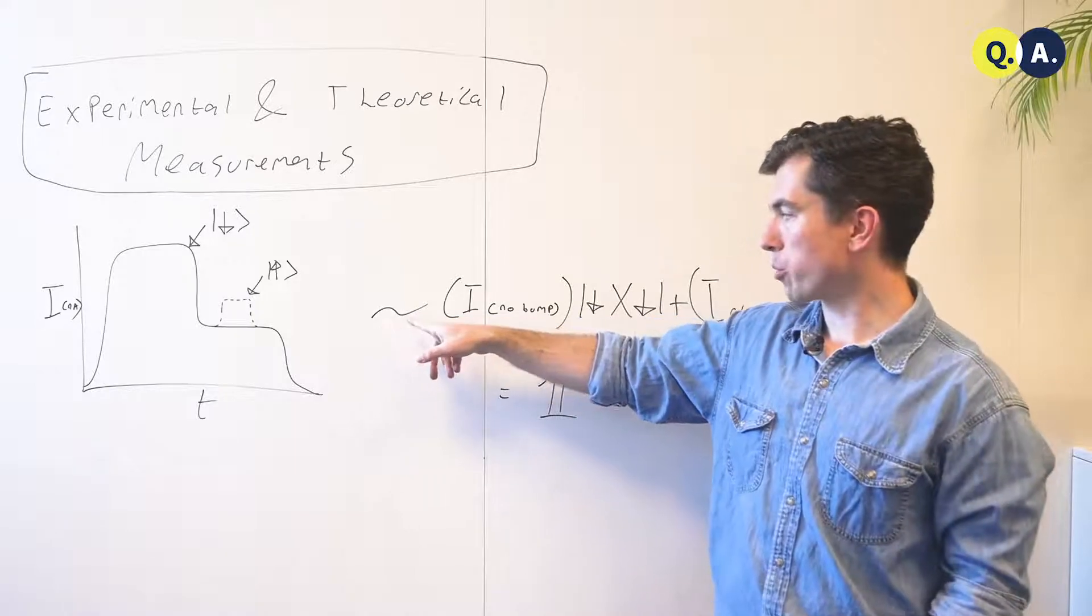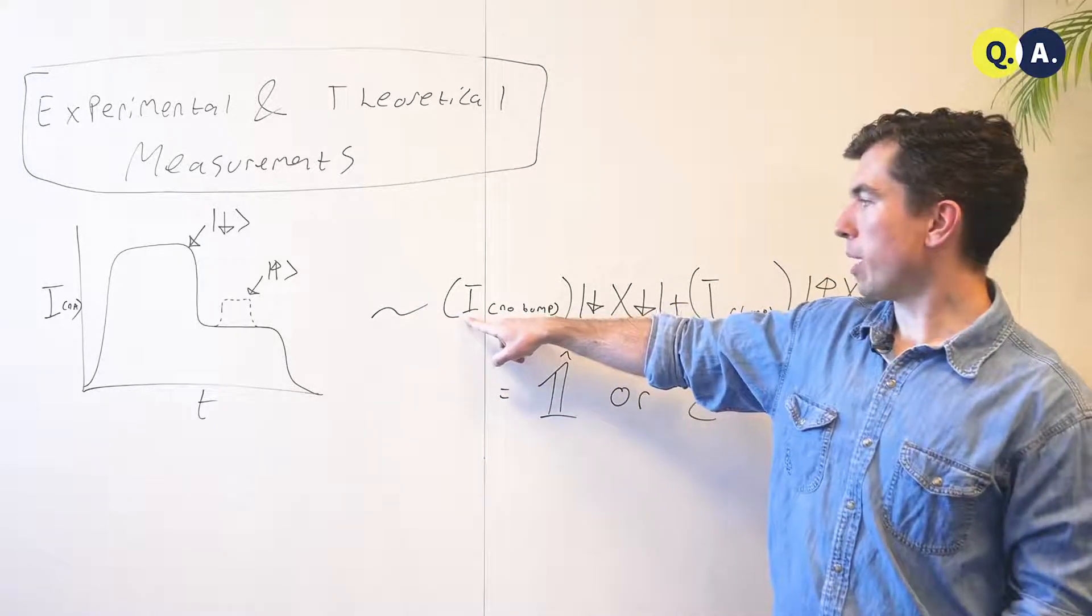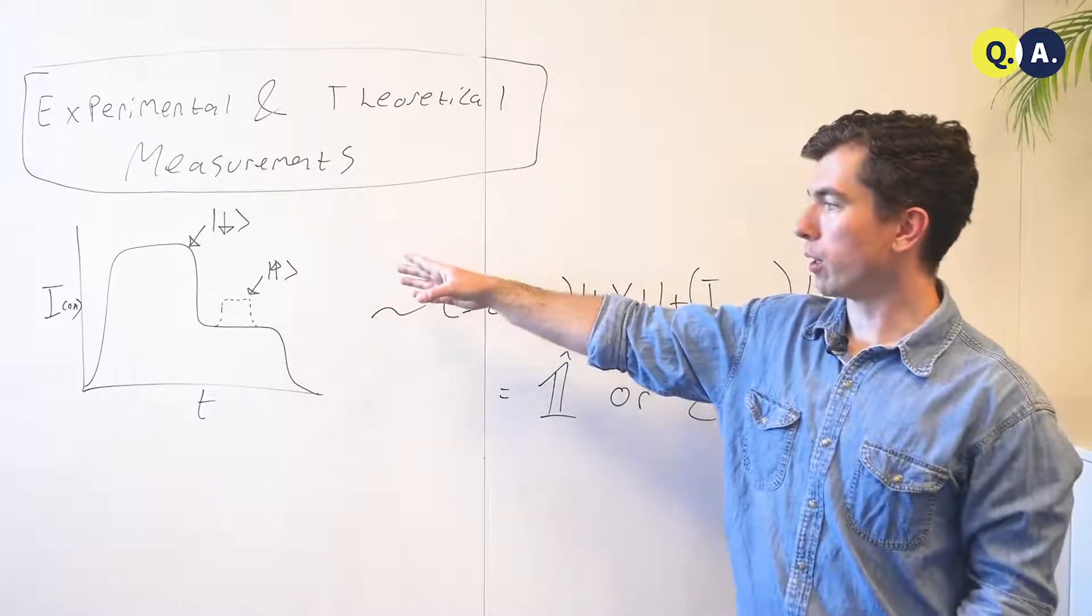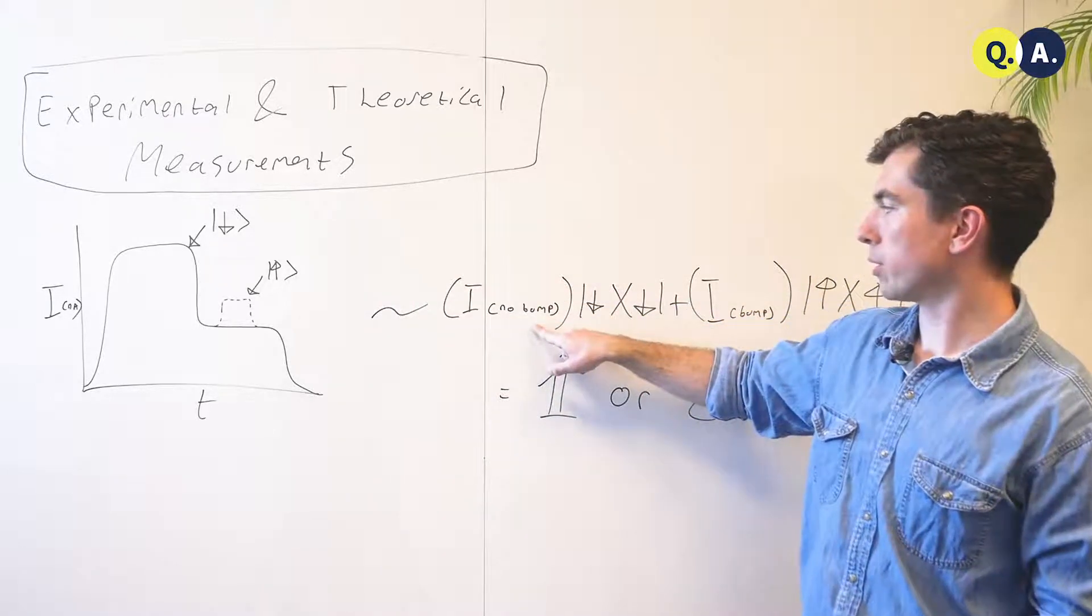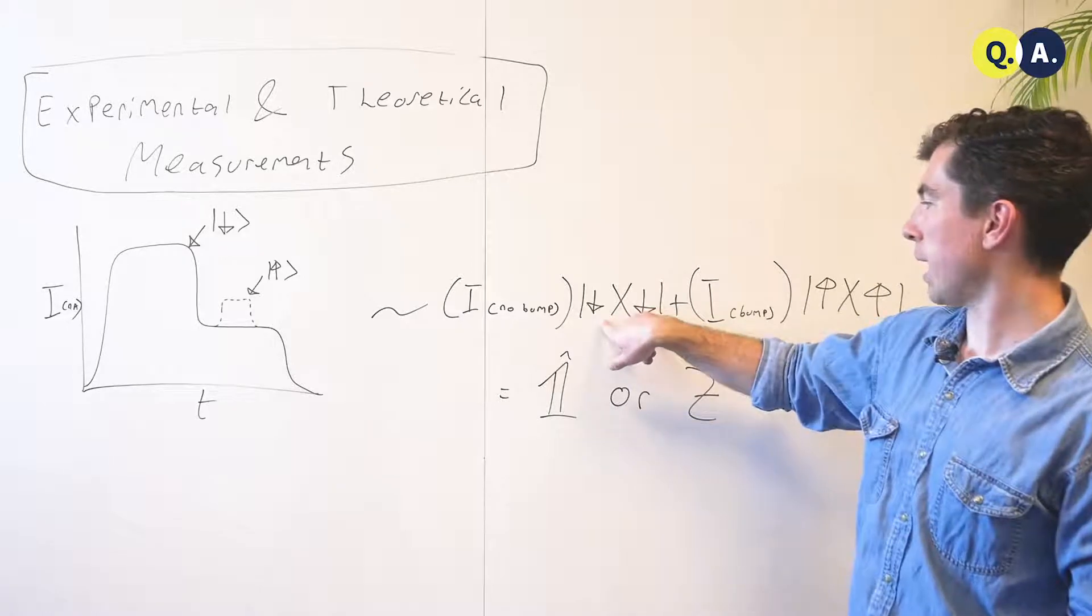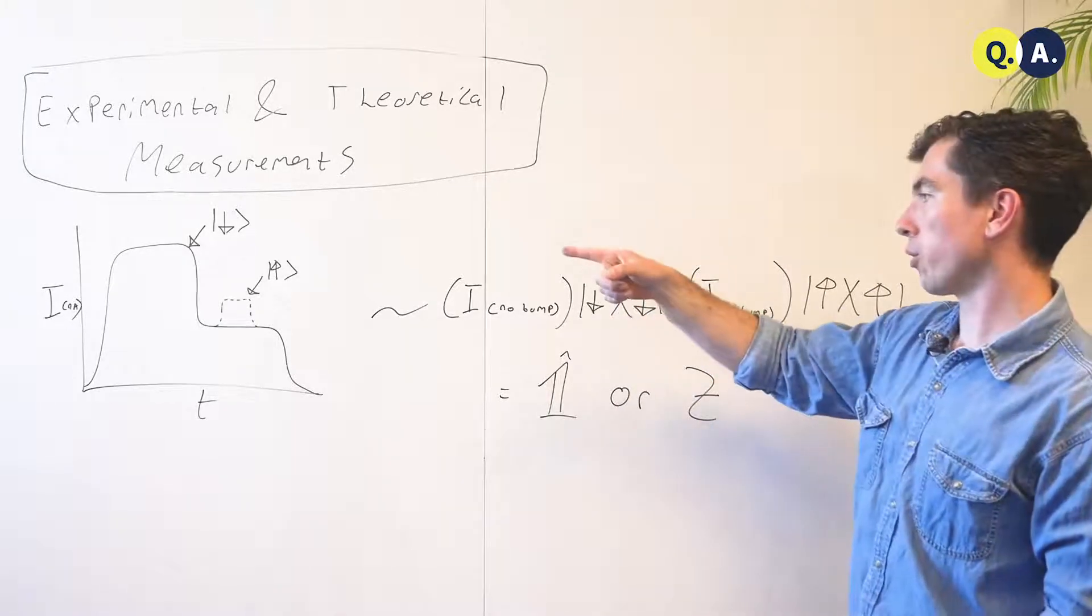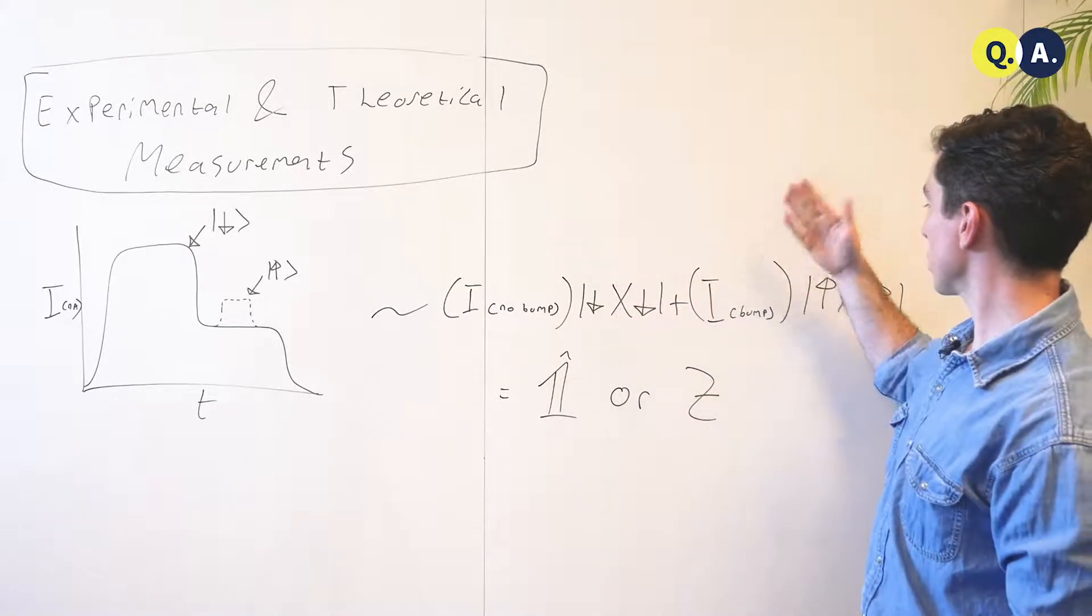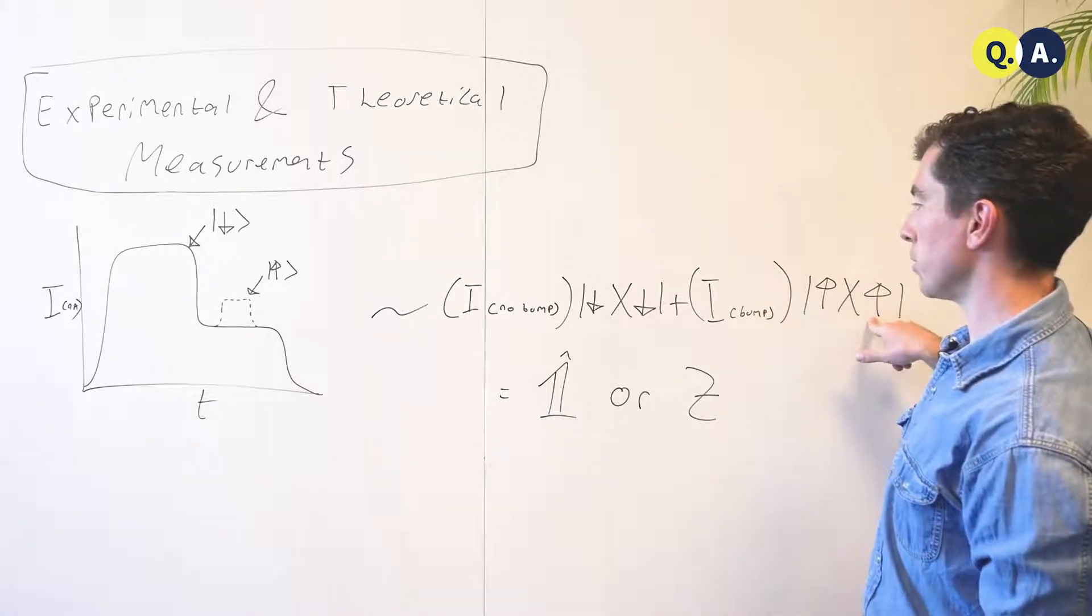And this relates to a measurement operator. You can imagine that we take the total area under this curve, the total amount of current in the case that there's no bump, and that corresponds to the spin down state. And the total current in the case that there is a bump will be slightly higher, and that corresponds to the spin up state.